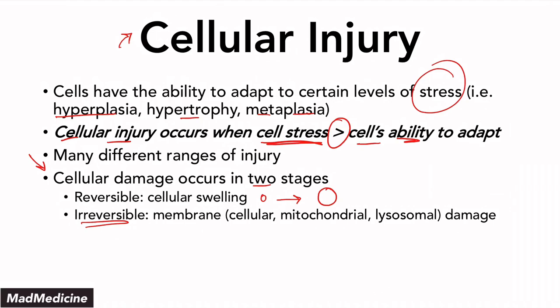The second stage is the irreversible stage, which has a hallmark of membrane damage. This can be the cellular membrane, but also the mitochondrial membrane and the lysosomal membrane. In the mitochondrial membrane, you have cytochrome C, and in the lysosomal membrane, you are housing enzymes that can break down the cell. Damage to all three will cause the cell to be unable to return to normal.